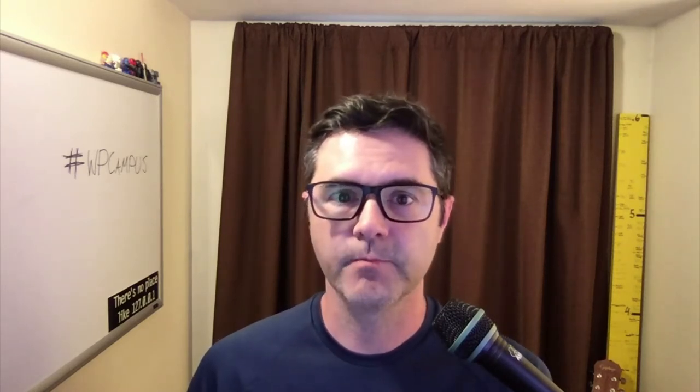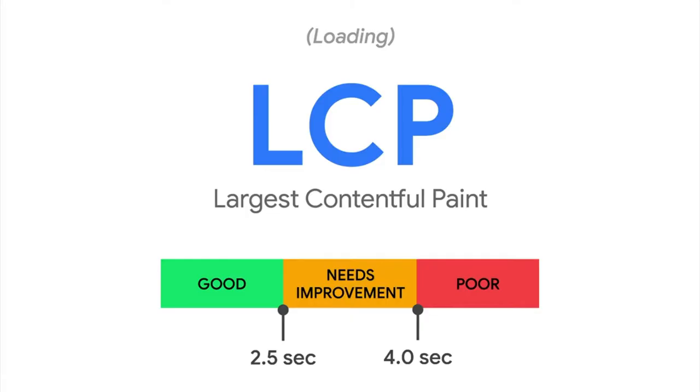The first metric we're going to look at is largest contentful paint. It is the loading metric of the three. It reports the render time of the largest image or text block visible within the viewport relative to when the page first started loading. LCP focuses on what the user actually sees on their screen. It has three potential scores: if LCP appears within the first two and a half seconds, that's considered good; two and a half to four seconds needs improvement; and anything above four seconds is considered poor.